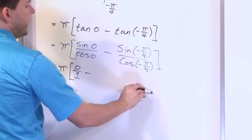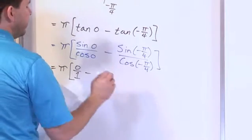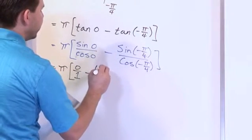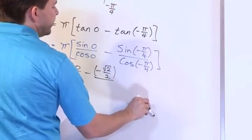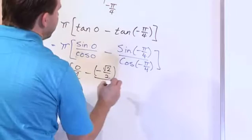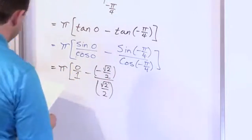What is the sine of negative pi over 4? If this is 0, negative pi over 4 is down here. Sine is negative down here, and it's square root of 2 over 2. So it's negative square root of 2 over 2. And on the bottom, the cosine of this negative pi over 4 is positive square root of 2 over 2, because cosine is positive in this quadrant.